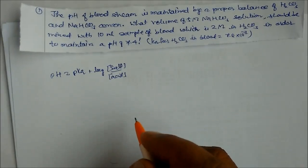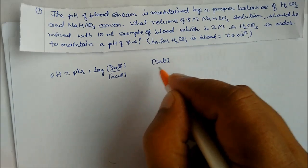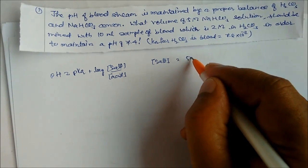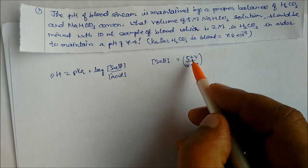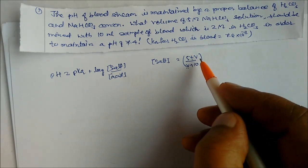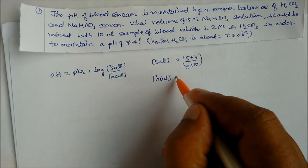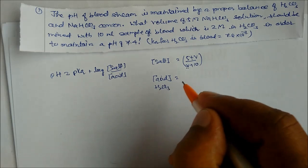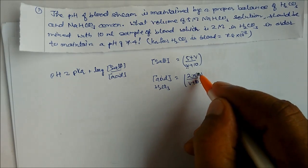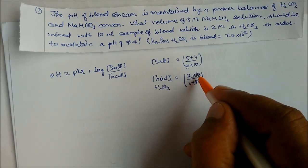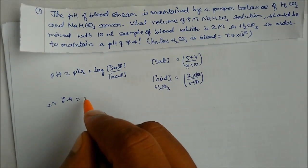In this equation, the concentration of salt is sodium bicarbonate, so we write 5V/(V+10). We are adding V mL of solution to 10 mL, so the total volume is V+10. For the acid, carbonic acid: moles = 2×10, divided by (V+10). Substituting: pH = 7.4 and pKa from Ka = 7.8×10⁻⁷.